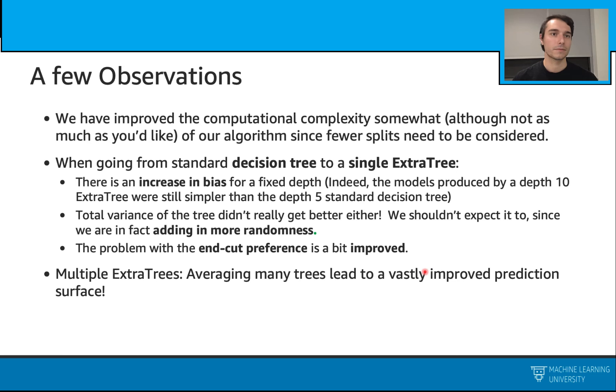Let's talk about what we observe here. With this, we have improved our computational complexity, because we are not checking all possible splits anymore. And when we are going from standard decision tree to a single ExtraTree, we had to increase our bias, because our ExtraTree is simpler than our decision tree, even if we have the depth of 10 in the ExtraTree. And also the total variance had to increase because we inserted some extra randomness here.